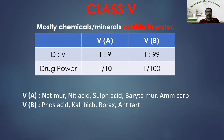Class five — mostly chemical or mineral, soluble in water. In class 5A, drug-vehicle ratio is 1:9, drug power is 1/10. Fundamental rule: Natrium muriaticum. Other drugs: nitric acid, sulphuric acid, Baryta mur, Ammonium carb. In class 5B, ratio is 1:99, drug power is 1/100. Fundamental rule: Phosphoric acid. Other drugs: Kali bichromicum, Borax, Antimonium tartaricum.